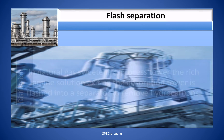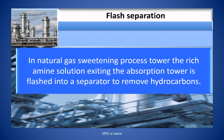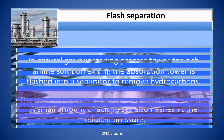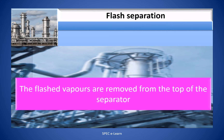In the natural gas sweetening process, the rich amine solution exiting the absorption tower is flashed into a separator to remove hydrocarbons. A small amount of acid gases also flashes at the reduced pressure. The flashed vapors are removed from the top of the separator.